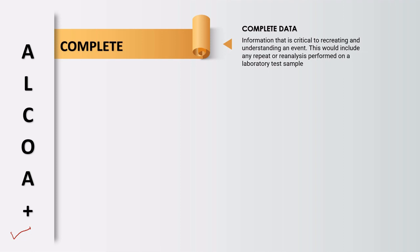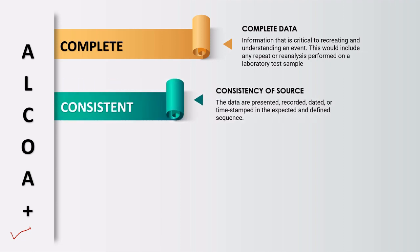The next parameter is Consistency — whenever data is recorded, it needs to have a date and time attached so that it becomes possible to create a chronology or sequence of events for that data. It also helps in capturing the sequence of expected data in a defined sequence.